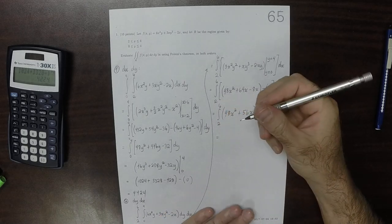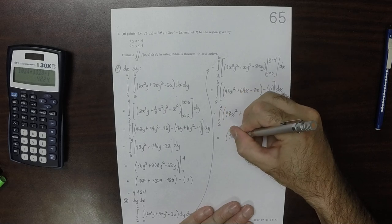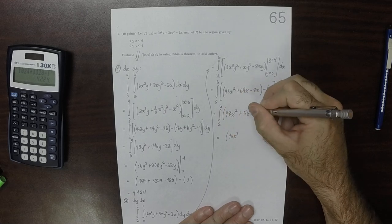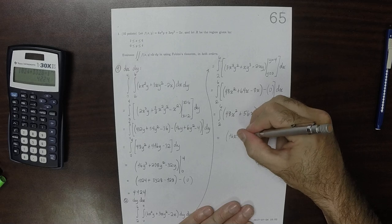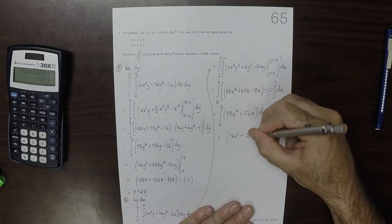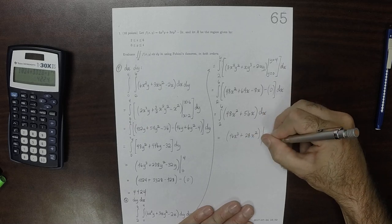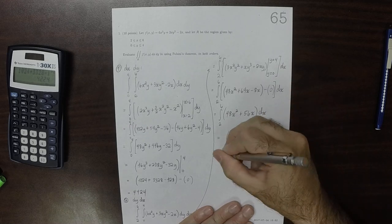Again invoking the fundamental theorem, this would be 16x cubed plus half of that is 28, so 28x squared, and now this is evaluated from 2 to 6.